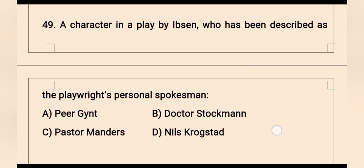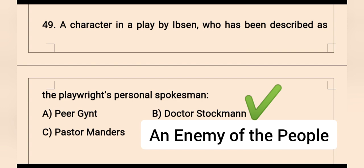Question 49: A character in a play by Ibsen who has been described as the playwright's personal spokesman — options are Peer Gynt, Dr. Stockmann, Pastor Manders, and Nils Krogstad. The right option is Dr. Stockmann. Dr. Stockmann is a character in the play An Enemy of the People, published in 1882, written by Norwegian playwright Henrik Ibsen. Dr. Stockmann has been described as the playwright's personal spokesman.